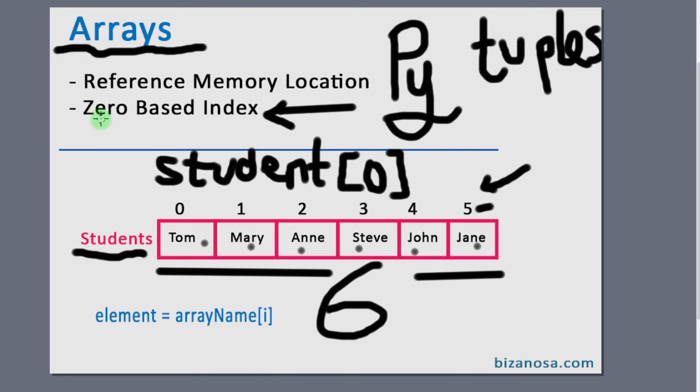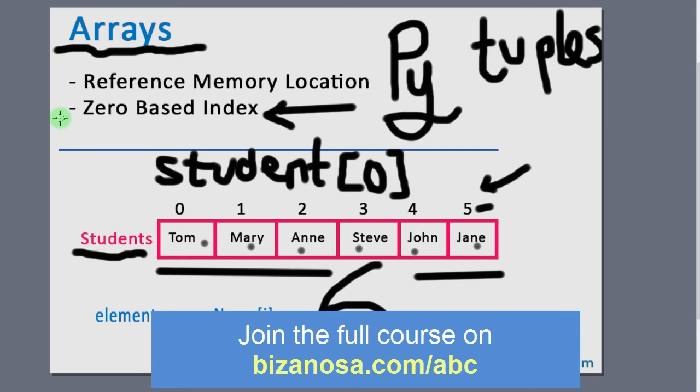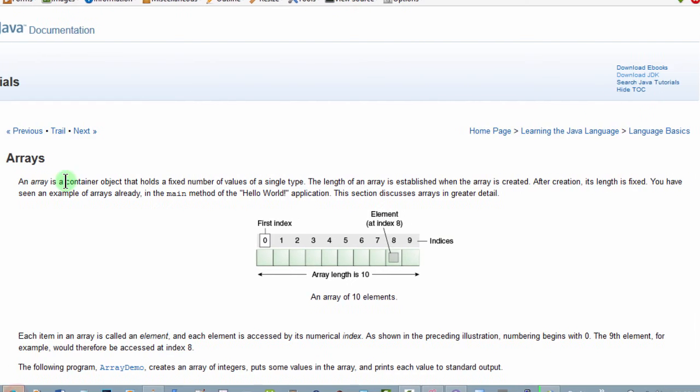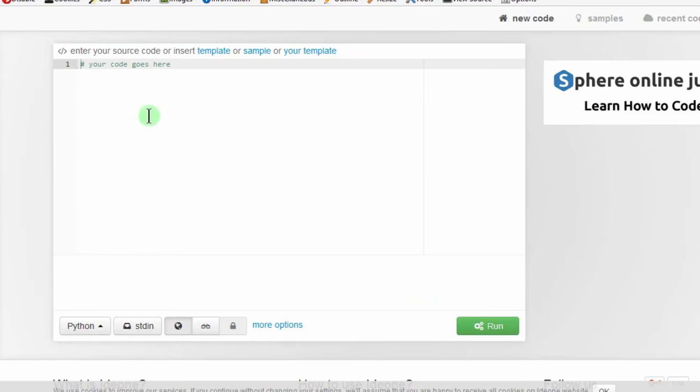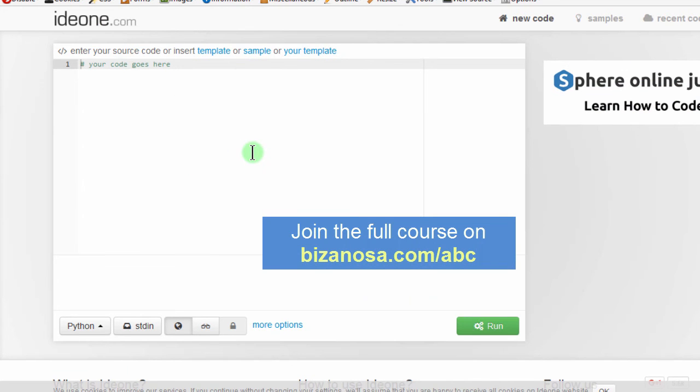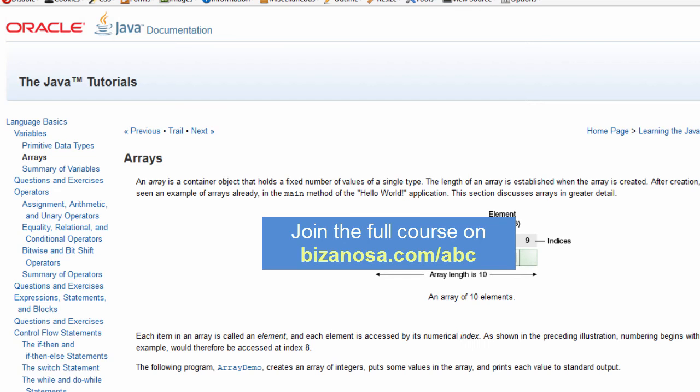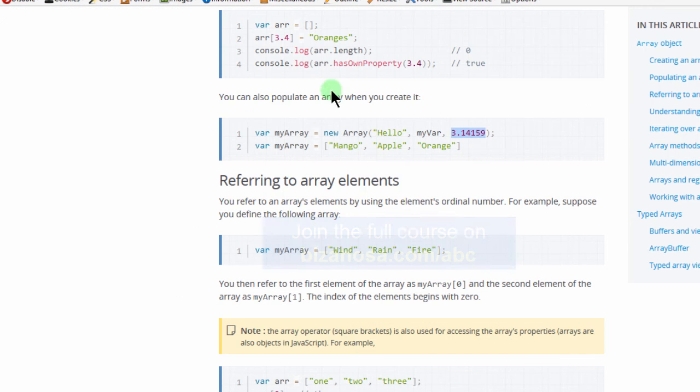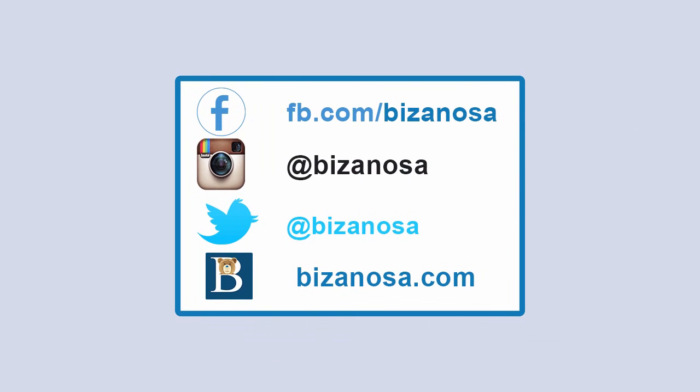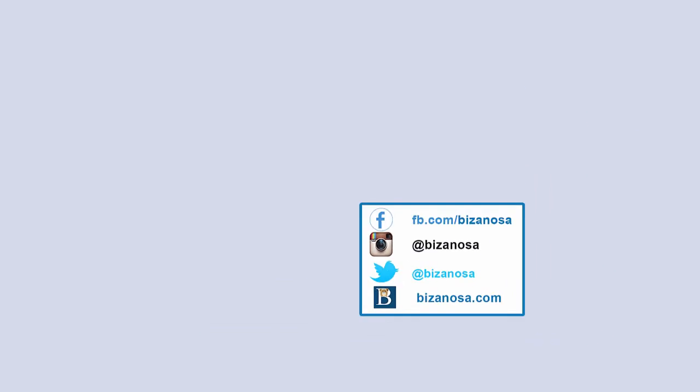So I will see you in the next video where we're going to continue from here and get ready for an example where we're going to do one example in Java, right here on IDE. So in this video, we have started looking at arrays and we have defined arrays based on documentation definitions. I will see you in the next video where we're going to continue right from here.